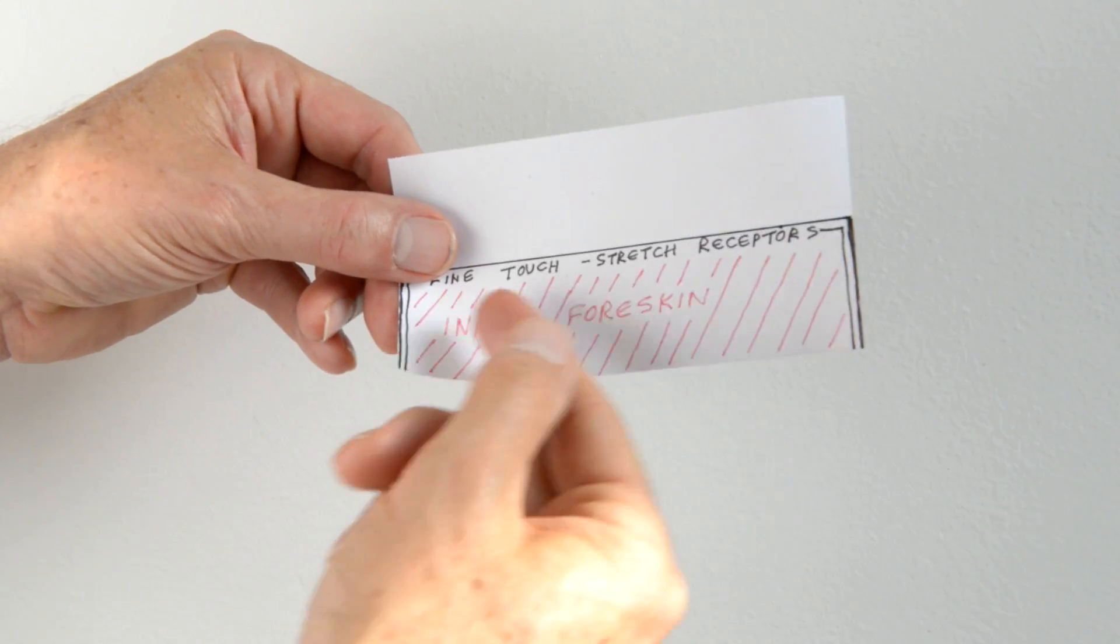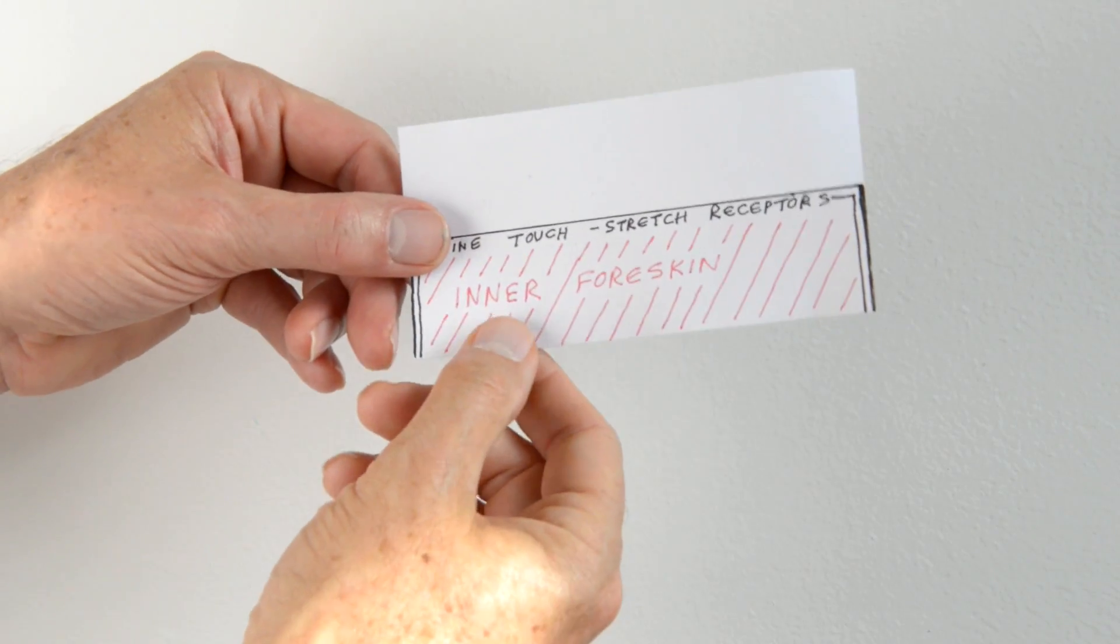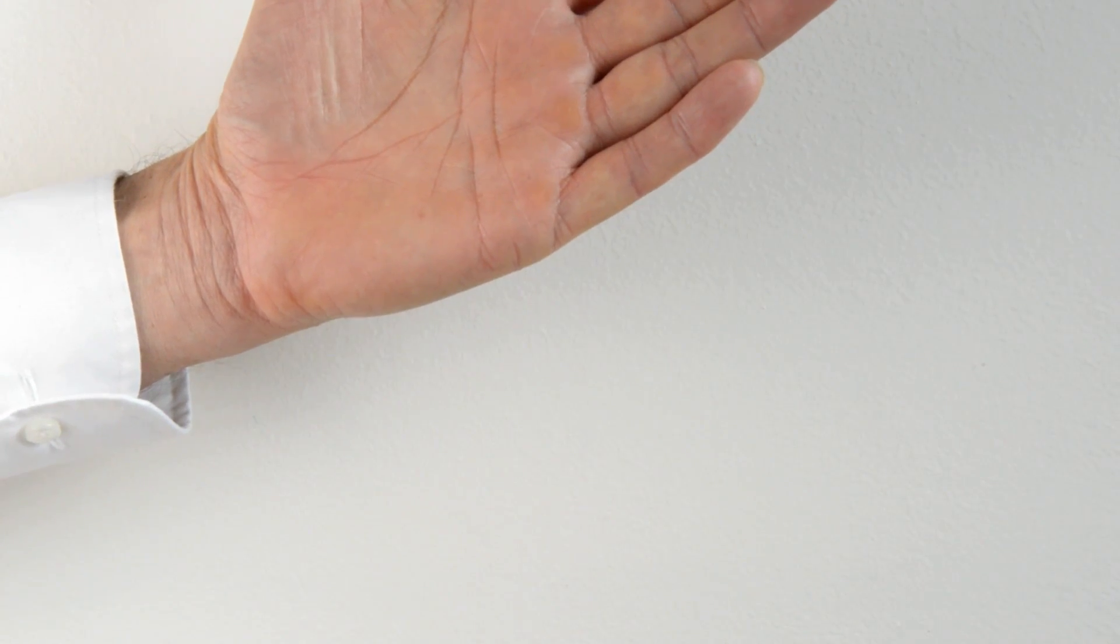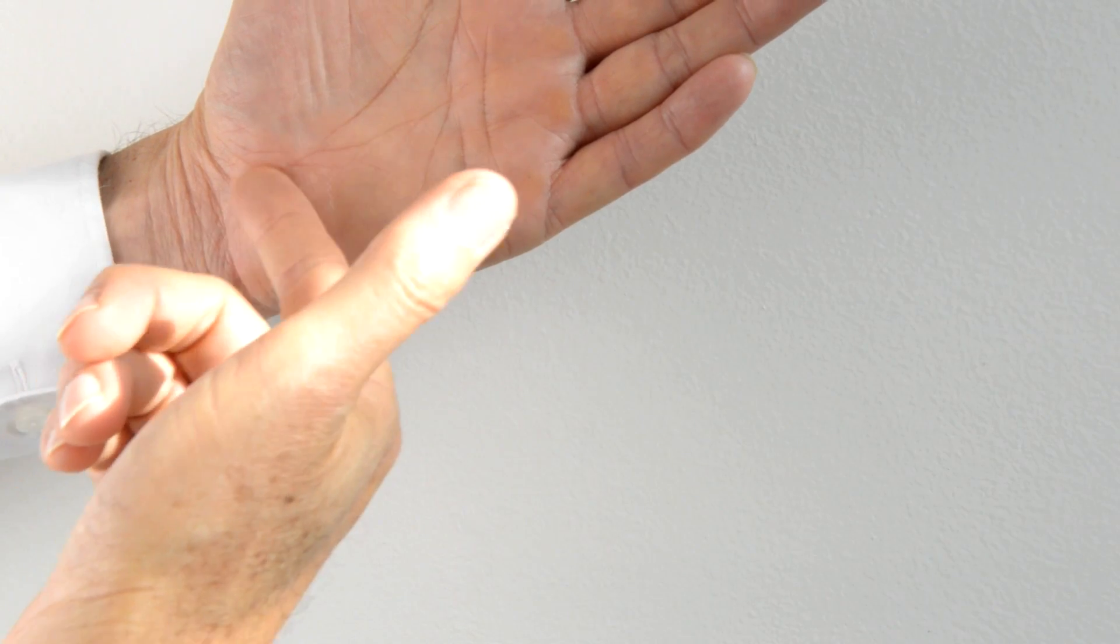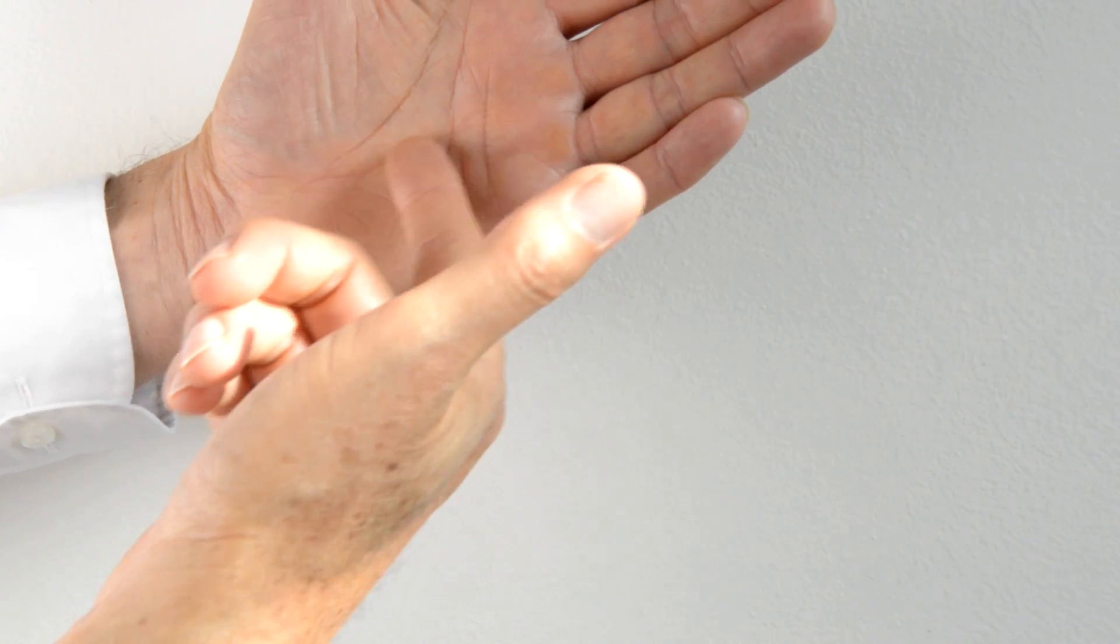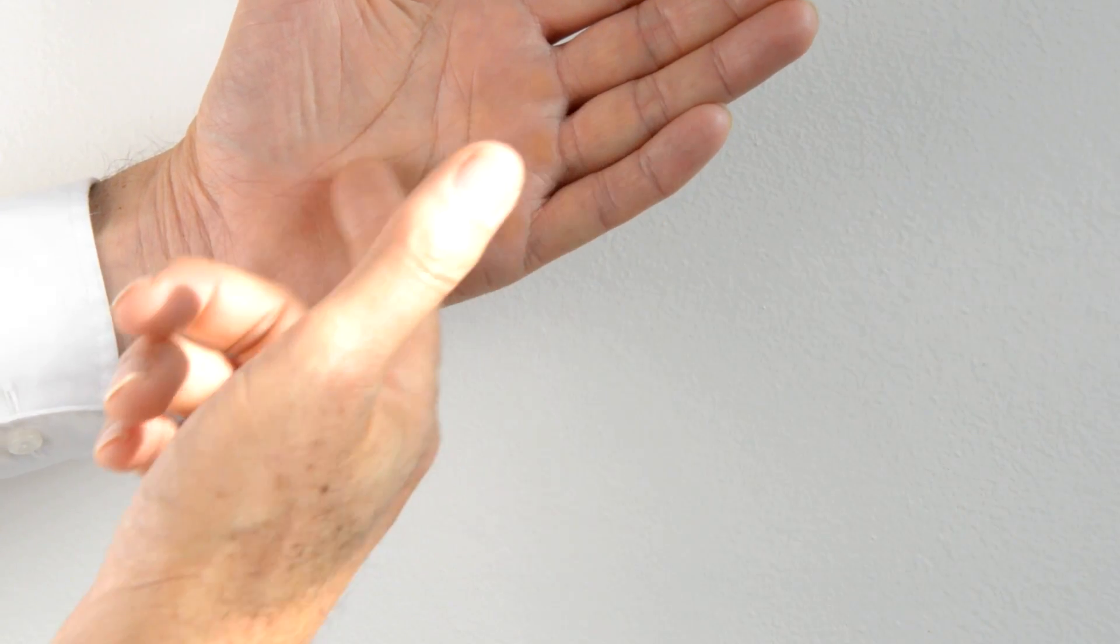What's taken, the inner foreskin, you can get an idea of how sensitive that is by taking the palm of one hand, rubbing a fingernail gently down the surface of the palm of the hand. And that represents something like the sensation of an inner foreskin.